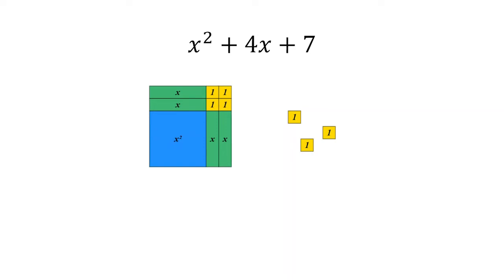Considering the length of the tiles we have a blue tile with x and x and green tiles with lengths of x and 1 and so we have a square with a side length of x plus 2 and so we can start by writing this as x plus 2 squared.